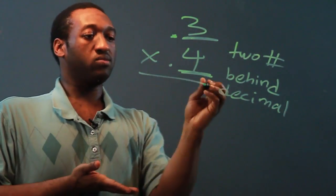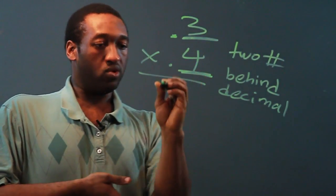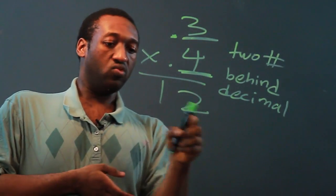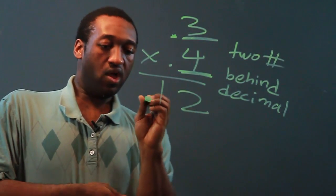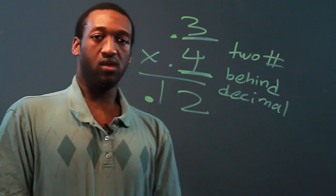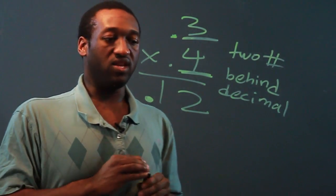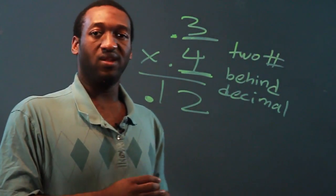If we know our basic multiplication facts, 3 times 4 is 12, and there's two numbers that should be behind the decimal, so we put the decimal place there. So, that's how we quickly multiply decimals in our head. Thanks for watching.